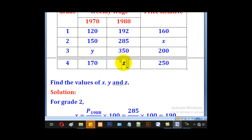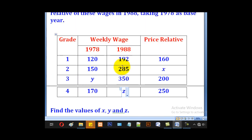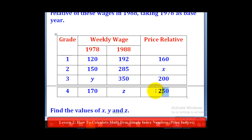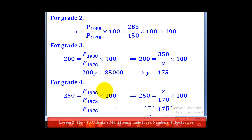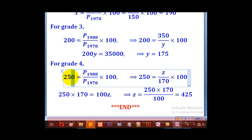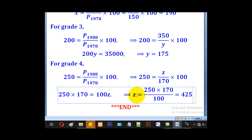For Z, it is the current price — the price of 1988. That means 250 equals Z divided by the base price of 170, everything multiplied by 100. So for grade 4, 250 equals Z over 170 times 100. Making Z the subject gives 425, which is our value of Z.